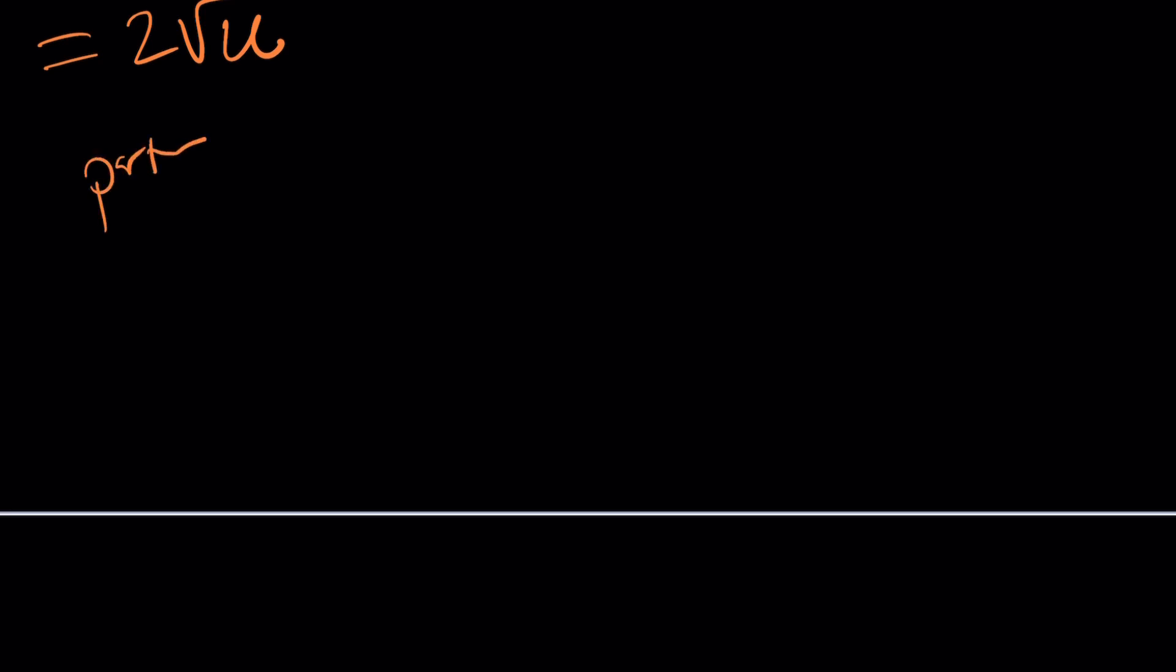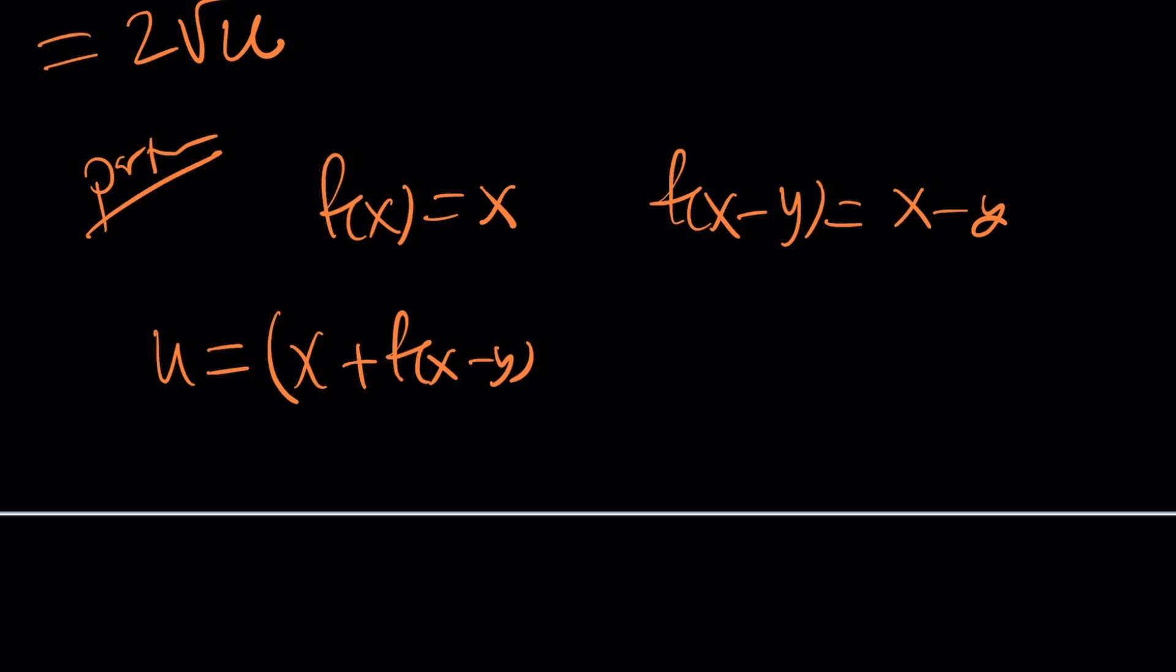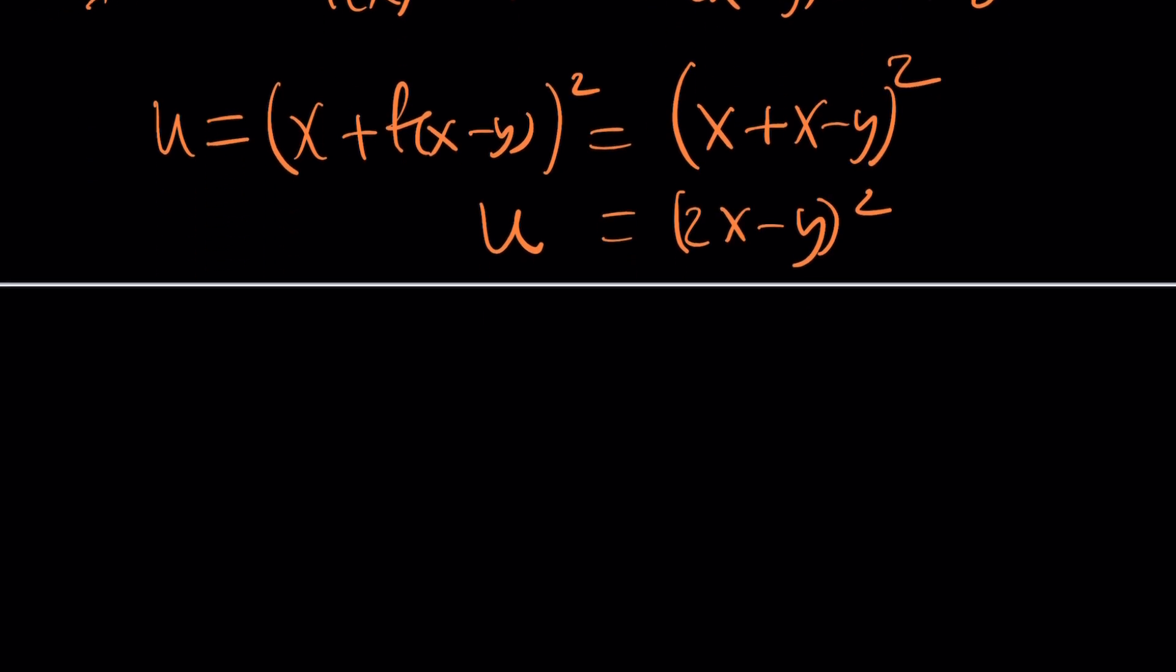So, let's go ahead and take a look at a particular case. So, particularly, we can say that what if f of x is equal to x? So, f of x minus y is just going to be x minus y. Now, u is x plus f of x minus y squared. Remember that? So, I'm going to replace f of x minus y with x minus y. So, it's just going to be 2x minus y squared. So, if u is this, is that going to work? Well, it should, right? But let me show you a more interesting case.